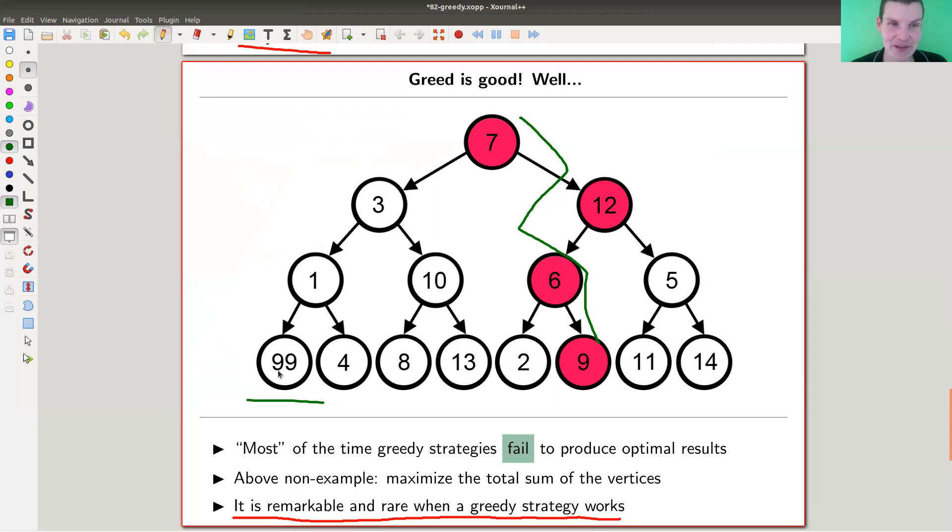But the greedy approach would tell me, well, 3 is smaller than 12. So I would go here, and then I'm actually already dead. So the red path here is the greedy path. And it's clearly not the optimal path, right? Because whatever I put here, I could put a super huge number here, and it would be arbitrarily off. And that's kind of what I expect would happen in real life as well, if you apply a greedy strategy.